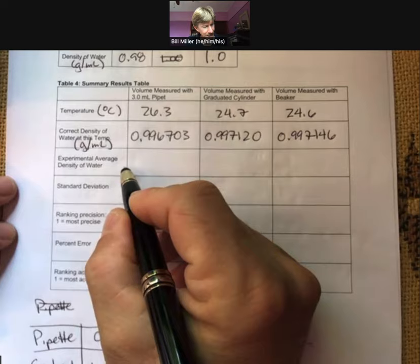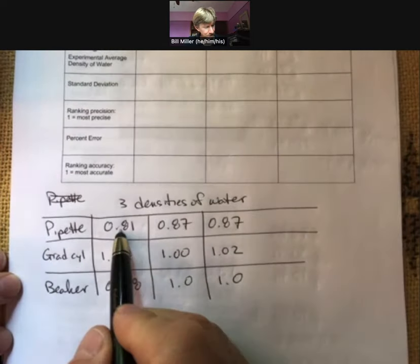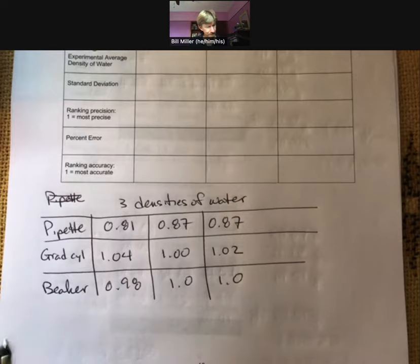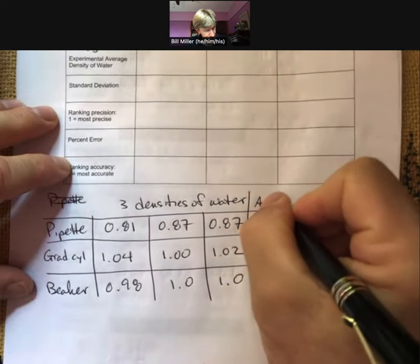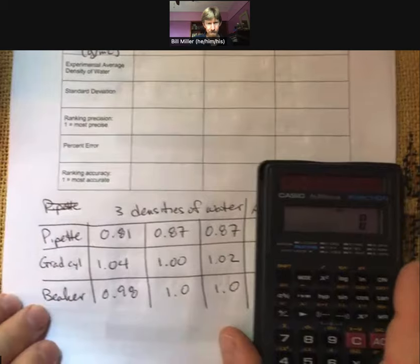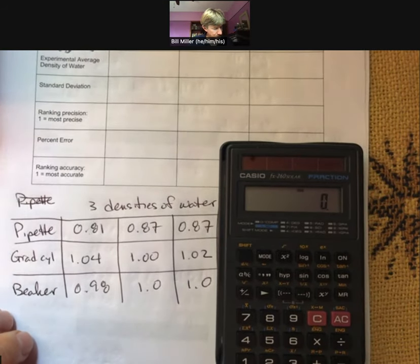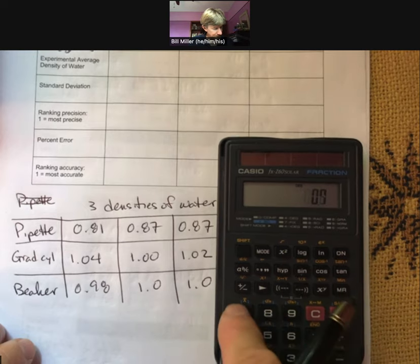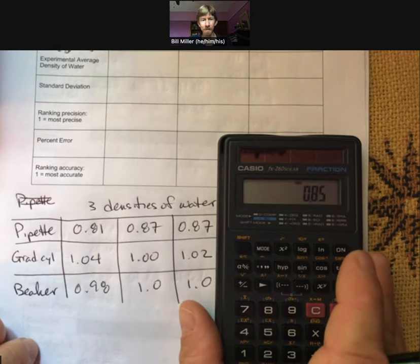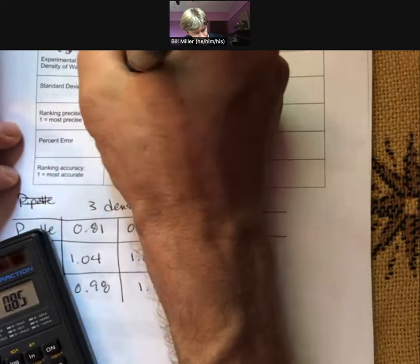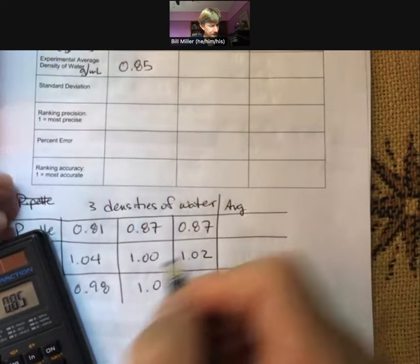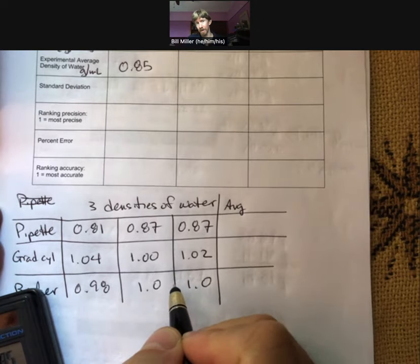Now for the experimental average for each of these, I'm just going to go down here and average these three values for the pipette. So that's going to be add them up and divide by three. So I can find my average. I'll just put it up into the table here. So it's going to be 0.81 plus 0.87 plus 0.87, and then divide by three, which equals 0.85. Same thing for the others, and I will let you do that for your own data actually.